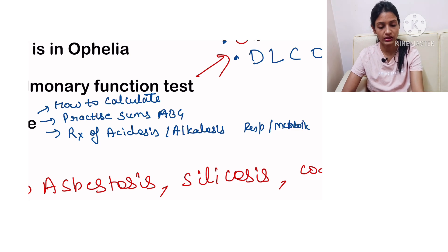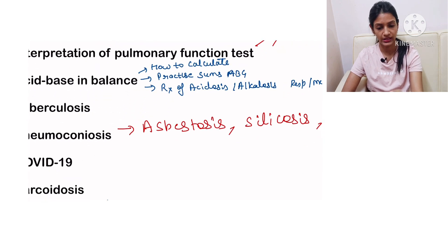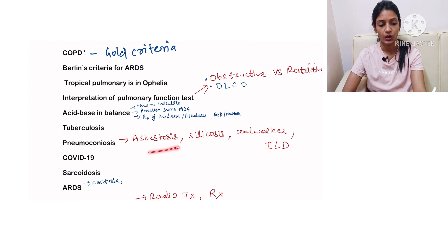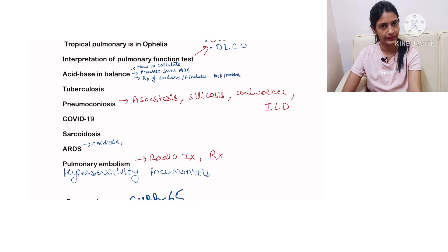TB, pneumoconiosis—in pneumoconiosis they can ask you asbestosis, silicosis, coal worker. Interstitial lung disease, then they can ask COVID-19, sarcoidosis.